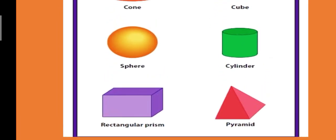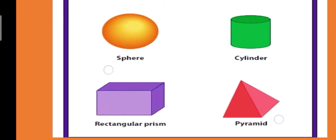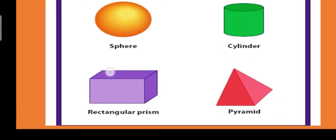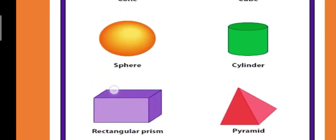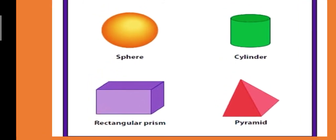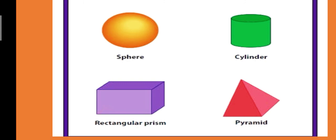पांचवां क्या है? Rectangular Prism. ये भी rectangle से similar होता है. And sixth one is Pyramid. Pyramid triangle से similar होता है, बट थोड़ा सा different होता है.